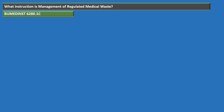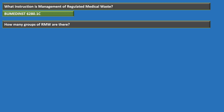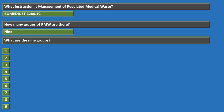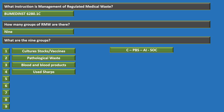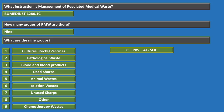The nine groups of regulated medical waste are: Group 1 — cultures, stocks, and vaccines; Group 2 — pathological waste; Group 3 — blood and blood products; Group 4 — used sharps; Group 5 — animal waste; Group 6 — isolation waste; Group 7 — unused sharps; Group 8 — other; Group 9 — chemotherapy waste.